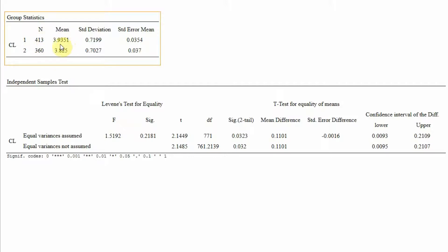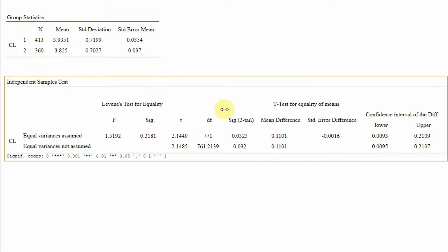Here are your results. For male, the sample size is 413, the mean is 3.93, and there is a standard deviation and standard error of mean. For female, the sample size is 360. Both groups have substantial sample sizes, so even if the data is not perfectly normally distributed, it should not be an issue.